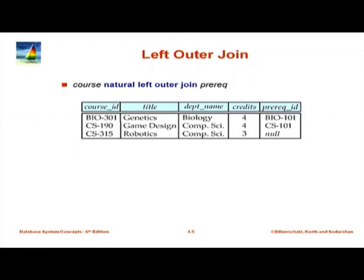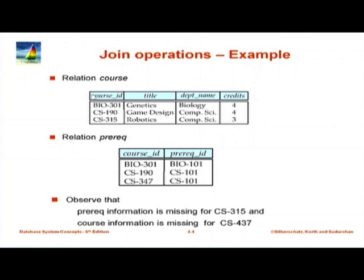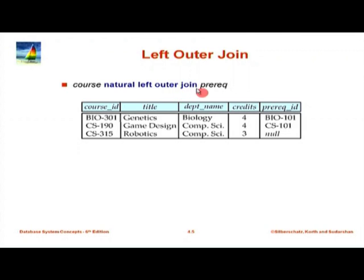Now let us look at the first kind of outer join. We are going to start with natural outer join. Supposing we take course natural left outer join prereq. The keyword natural with join means that columns with the same name are equated — in this case, the only column in common is course ID. If we did a natural join, BIO 301 would match and CS190 would match, but CS315 does not have any matching tuple, so in a regular natural join that tuple would be dropped. In contrast, if we say natural left outer join, the tuple CS315 is preserved.